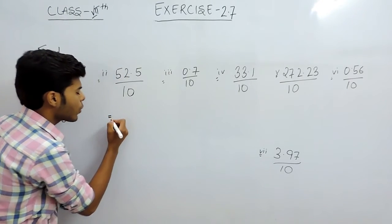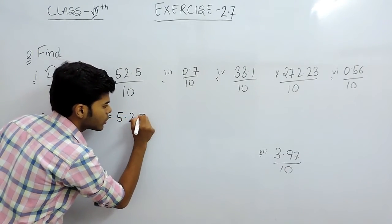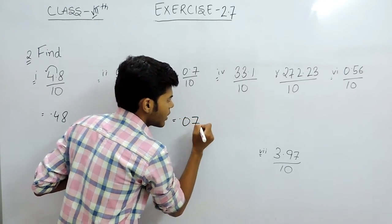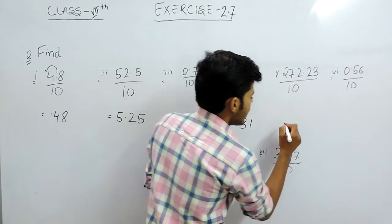So decimal will be shifted 1 point towards left and the answer will be 5.25. And this one the answer will be 0.07. Here the answer will be 3.31.